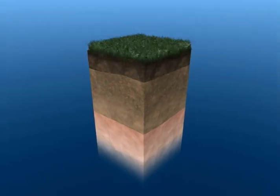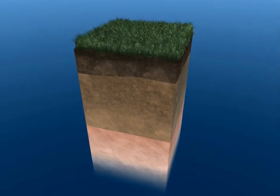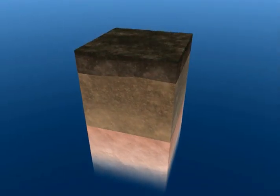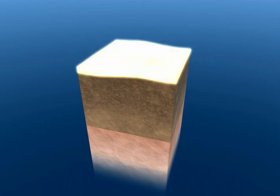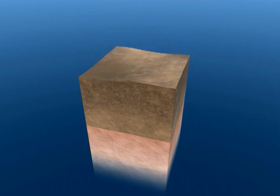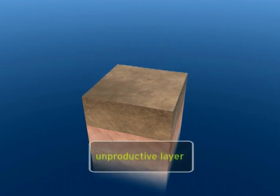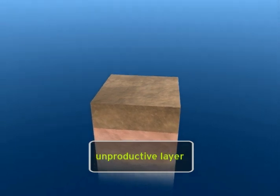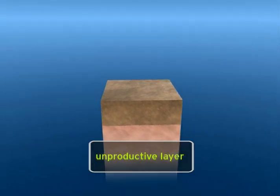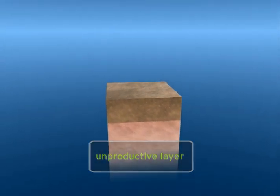Erosion removes the topsoil first, eventually exposing the less productive subsoil beneath. In the most severe cases, eroded land may no longer be productive and must be abandoned.